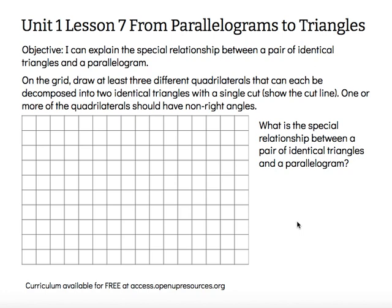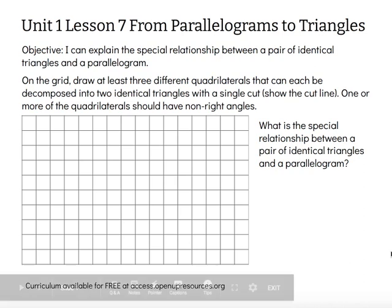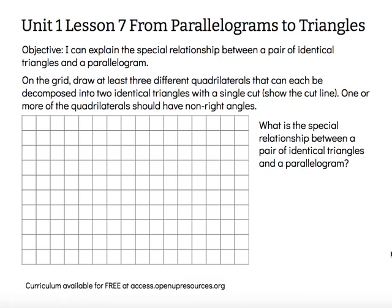Quadrilaterals — when I hear that, I think of squares and rectangles. So I can certainly use those, but that last part says one should have non-right angles, so I'm going to have to draw a quadrilateral that's not a square and not a rectangle. I'll start with my square.